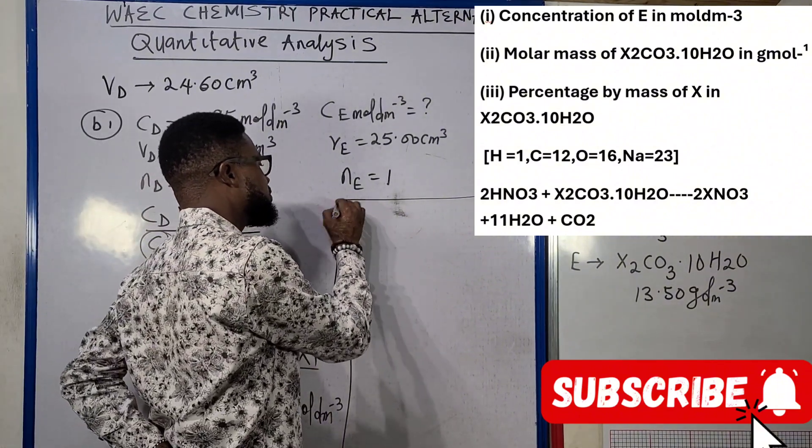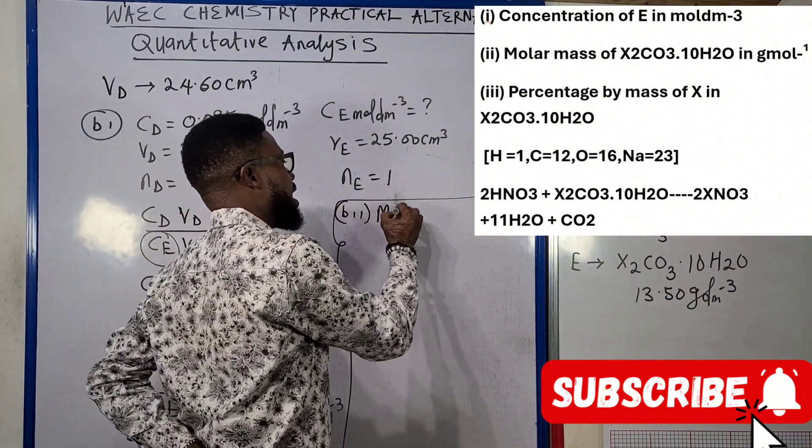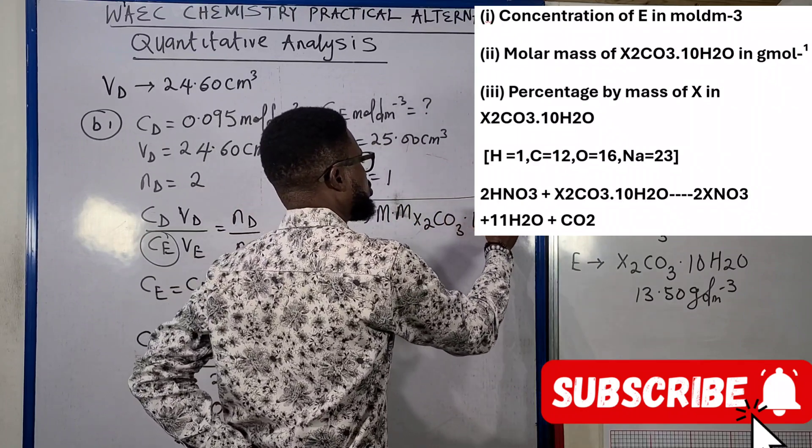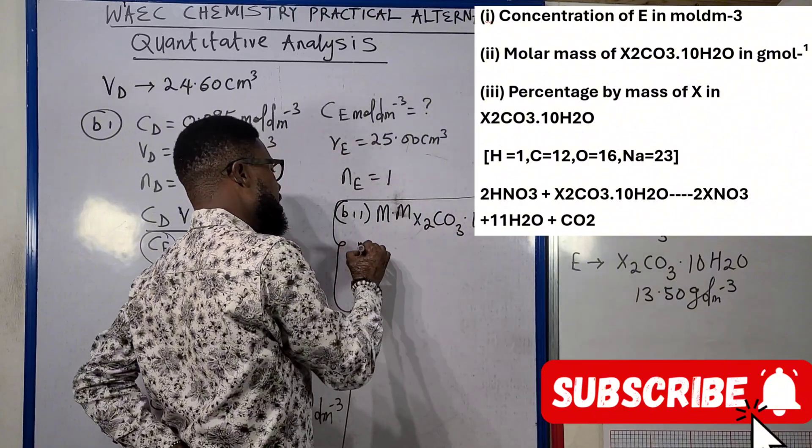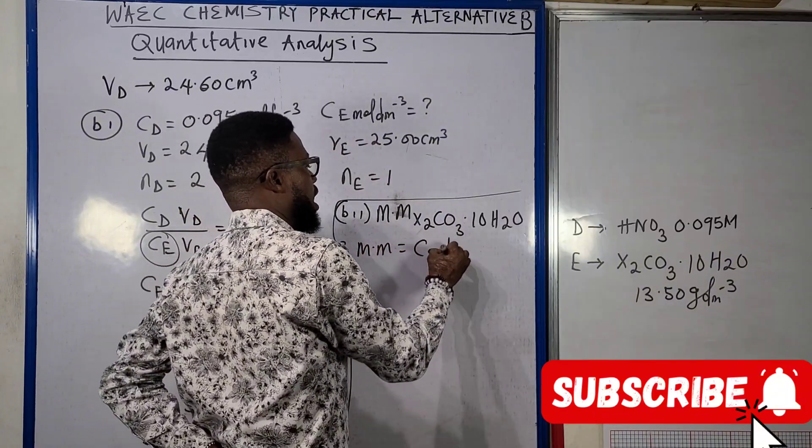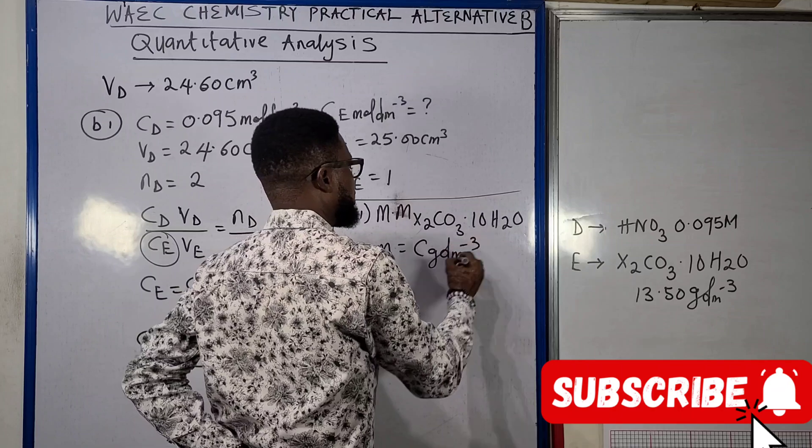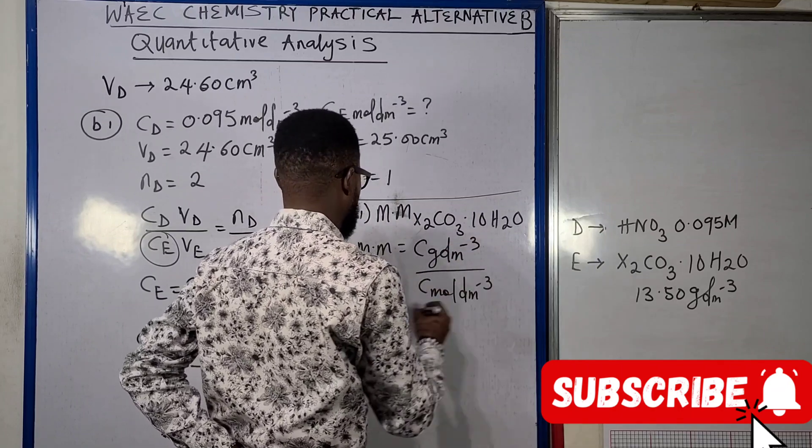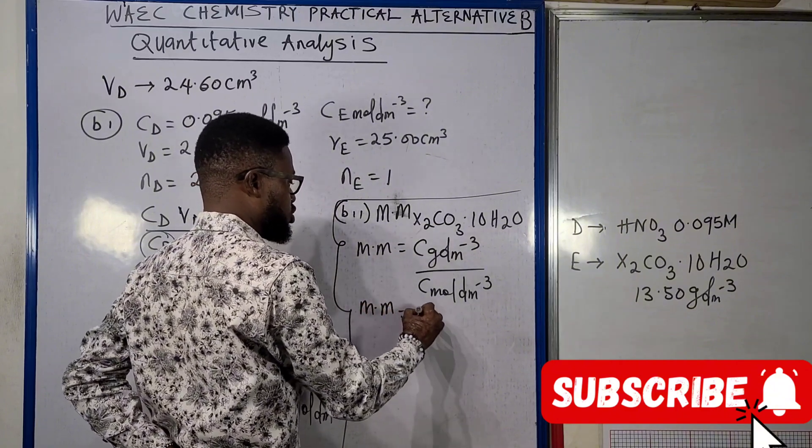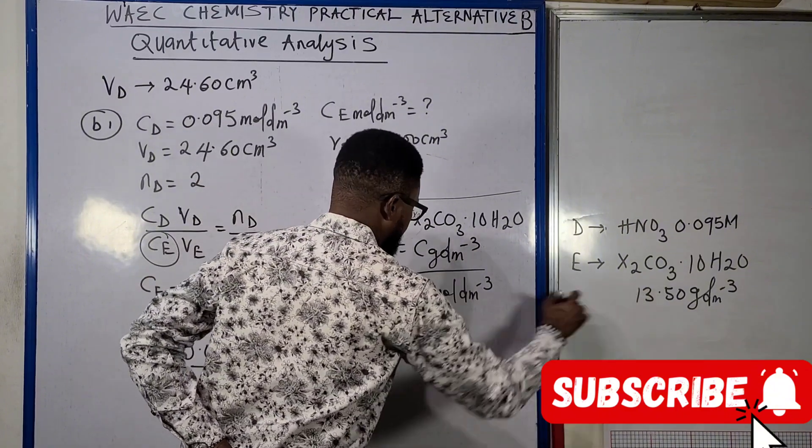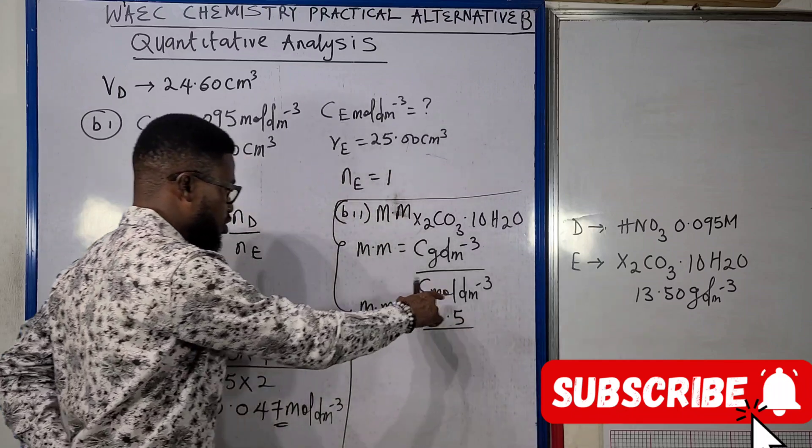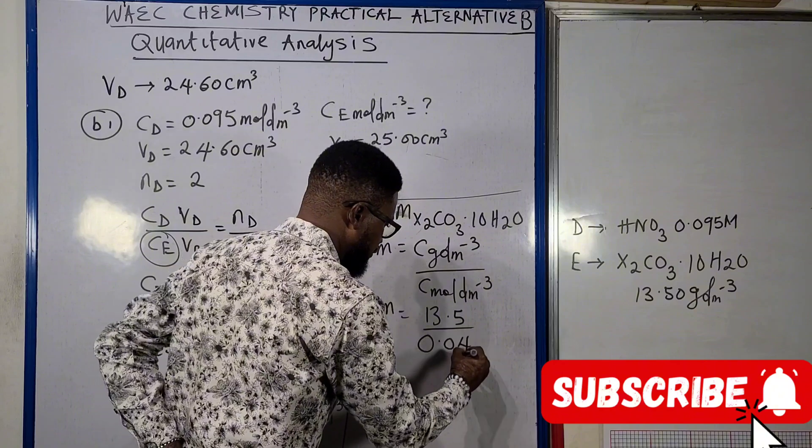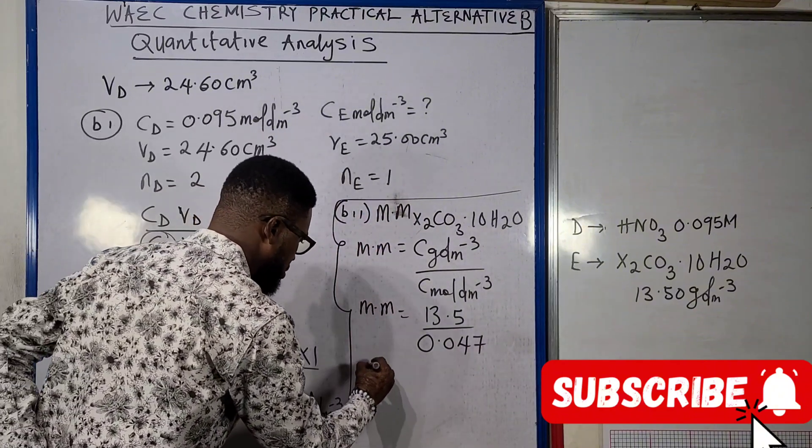For B2, as you can see in the question on your screen, we're told to look for the molar mass of Na₂CO₃·10H₂O in grams per mole. Normally, molar mass is actually concentration in grams per dm³ divided by concentration in mole per dm³.